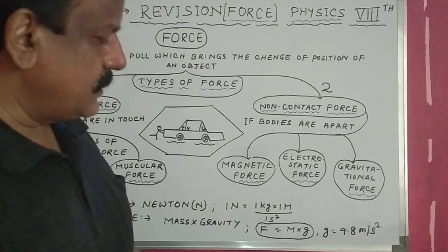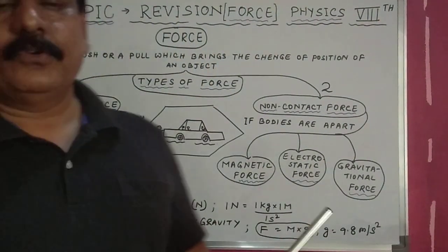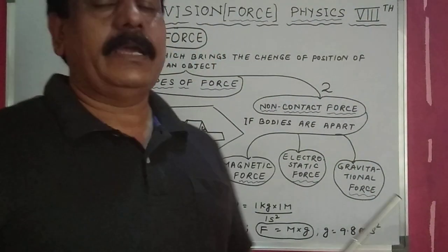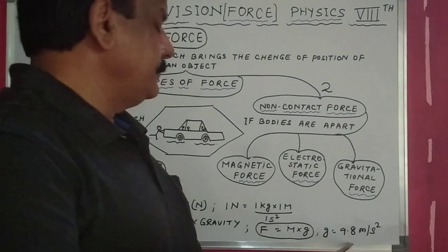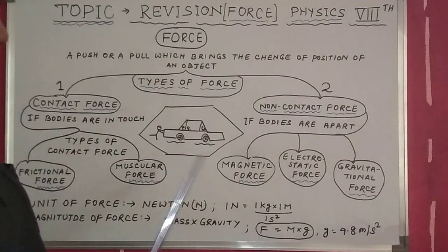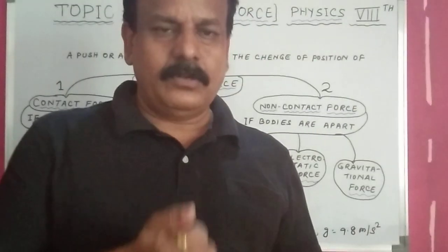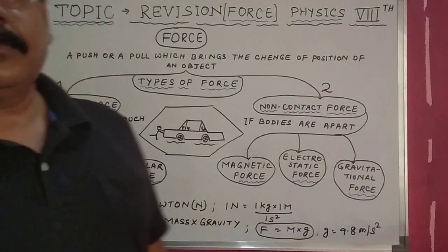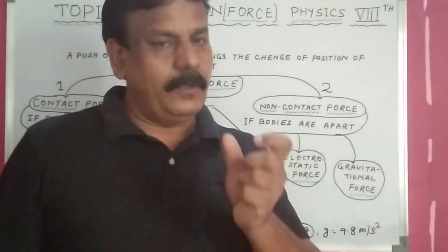The value of gravity g is 9.8 m/s², which is a scientifically proven value. Whenever you have to find force, you need mass and gravity. I have also drawn a figure of a car — someone is pushing the car — just to illustrate force being applied by pushing or pulling. You can draw your own figure as well. This completes the revision of force.